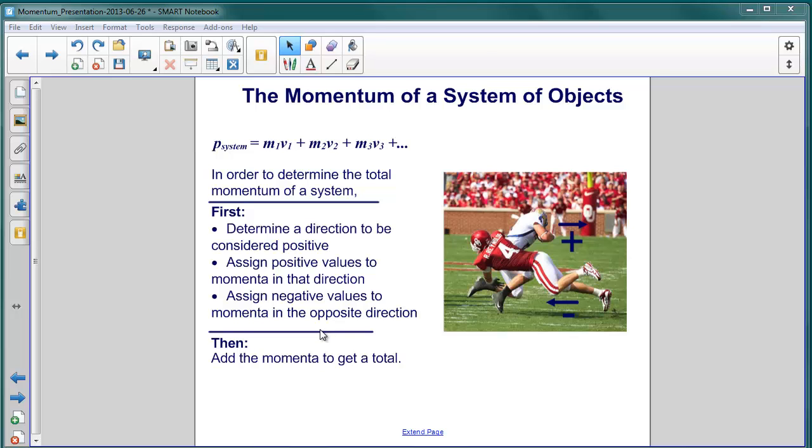So you may have multiple objects. For all those that are moving to the right, give them positive values. All those moving to the left, you give negative values. And then simply add all of those up to get the total momentum for the system.